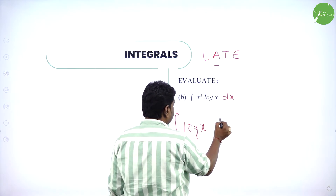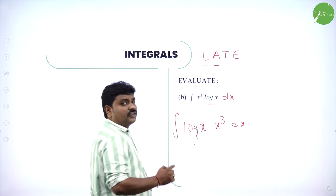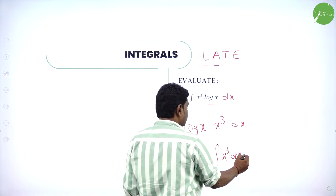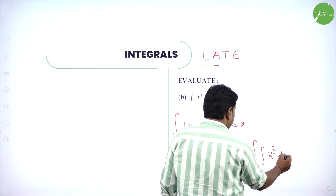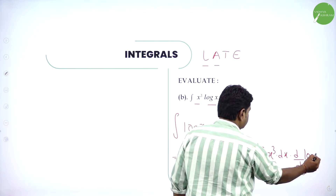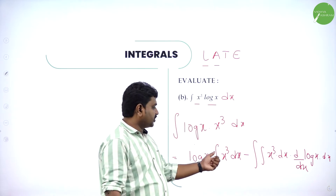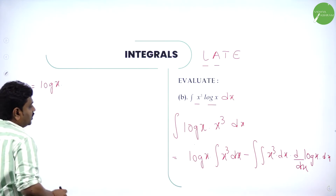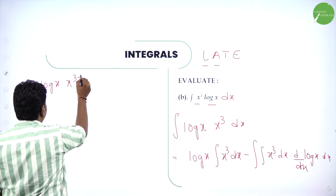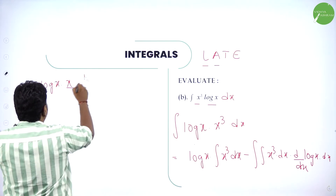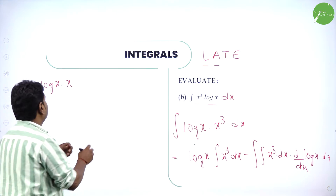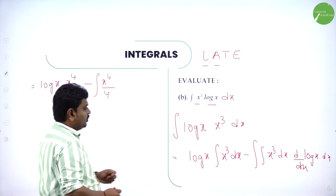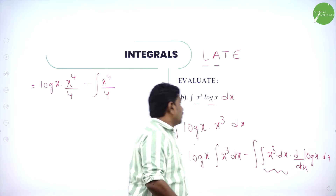I rewrite the question as log(x)·x³ dx. First function is log(x), second function is x³. For product of two functions use parts: first into integration of second minus integration of integration of second into derivative of first. Simplify: log(x) into integration of x³ is x^(3+1)/(3+1) = x⁴/4, minus integration of x⁴/4 into derivative of log(x) which is 1/x dx.